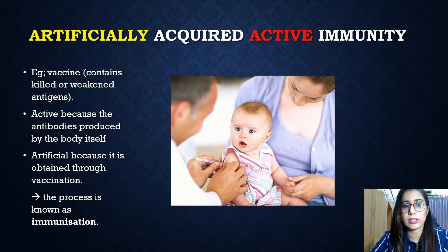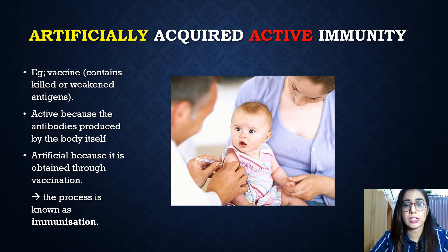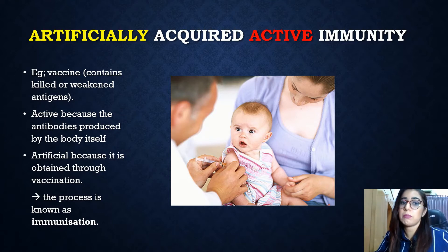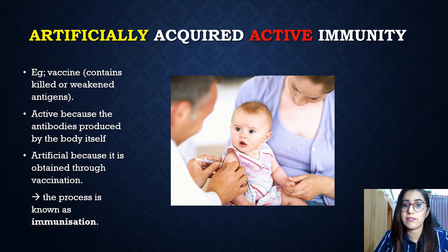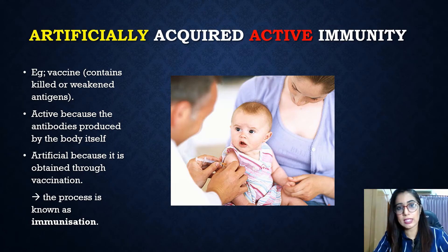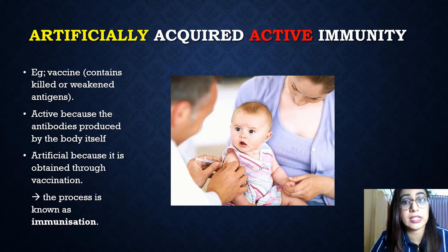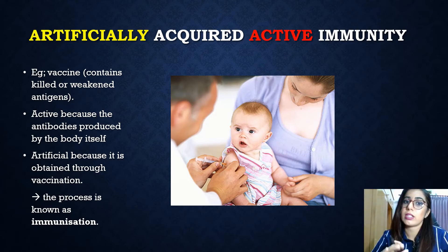Now let's look at artificially acquired active immunity. It is important to protect oneself from being infected by highly infectious diseases. An individual can be immunized against a disease — immunization is the process that stimulates immunity against a specific disease through vaccine injection.